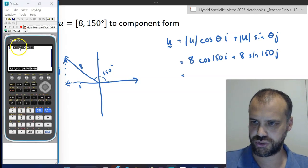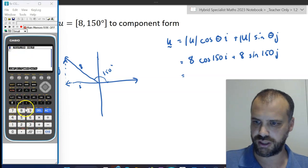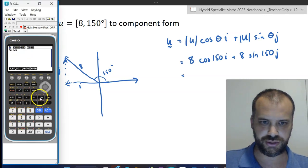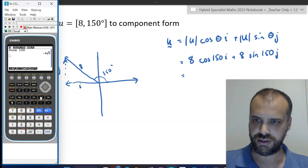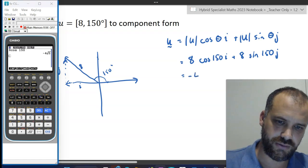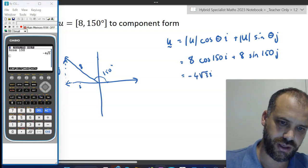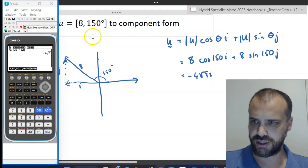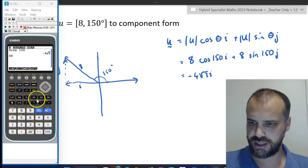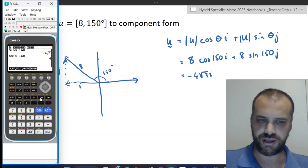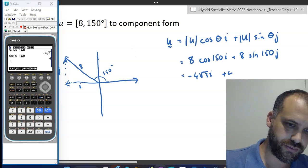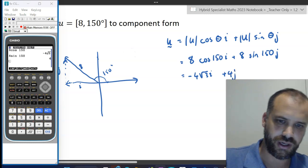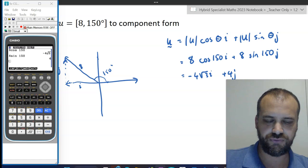Okay, I've got my calculator here, make sure you're in degrees mode and we're going to go 8 cos 150 and there's negative 4 root 3i and we're going to go 8 sin 150 and that's going to give us 4. All right, negative 4 root 3i plus 4j.